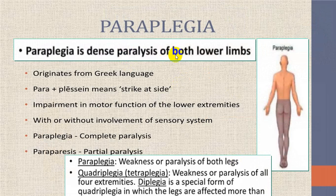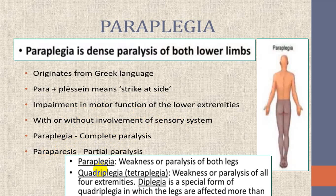Paraplegia comes from the Greek word meaning 'strikes at sight.' Plegia means complete paralysis; paresis means partial. Paraparesis means partial weakness. Quadruplegia involves all four extremities. When two lower extremities are more involved than upper extremities, we use the word diplegia. In cerebral palsy, two lower limbs may be more involved than upper limbs — this is called cerebral diplegia.